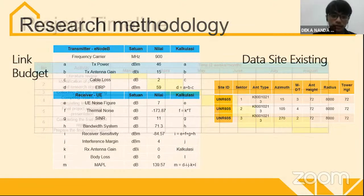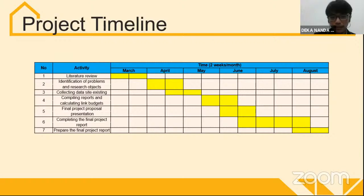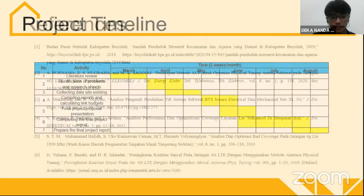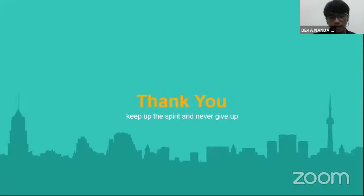This is the project timeline. Literature review was conducted in March. Identification of problems and research object was in April. Collecting existing site data was in late April and early May. Compiling reports and calculating the link budget runs from May to June. The final project proposal presentation is planned for June, and completing the final project report is planned to begin in August. The research uses 13 references in total.